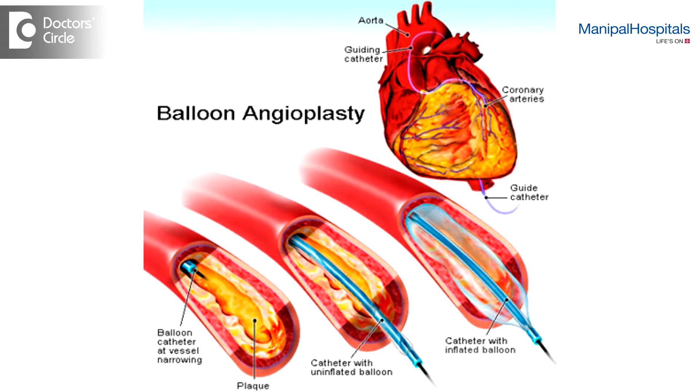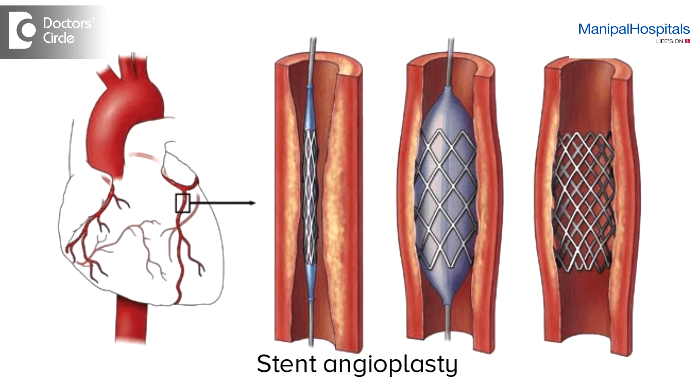In angioplasty, a wire is passed across the block, the block is dilated using a balloon, and then a stent is taken. The stent is crimped on a balloon, taken to the block site, inflated, and the stent remains while the balloon comes back. So angioplasty is the whole process of doing it, and the stent is the material which remains inside the body.